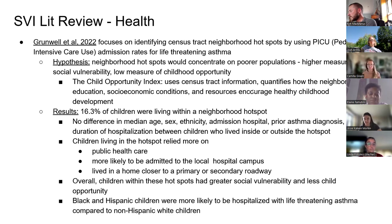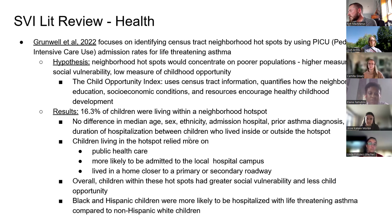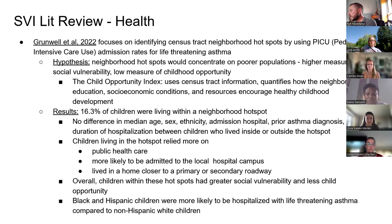The results showed that 16.3 percent of children were living within a neighborhood hotspot. There were no differences in median age, sex, ethnicity, admission hospital, prior asthma diagnosis, or duration of hospitalization between children who lived inside or outside the hotspot. But children living in the hotspot relied more on public healthcare, were more likely to be admitted to the local hospital campus, and lived closer to a primary or secondary roadway. Children within these hotspots had greater social vulnerability and less childhood opportunity, and Black and Hispanic children were more likely to be hospitalized with life-threatening asthma compared to non-Hispanic white children.